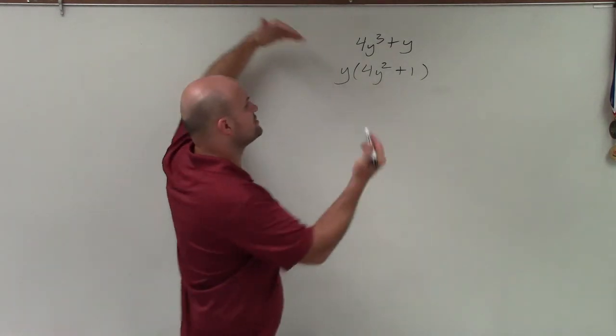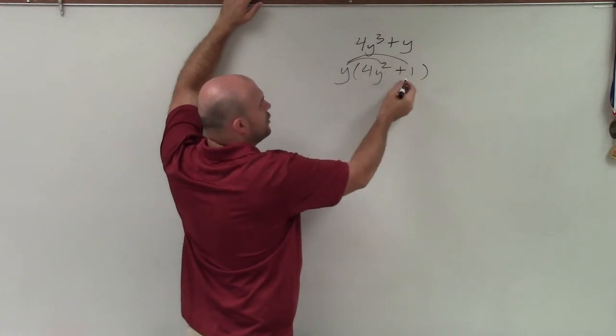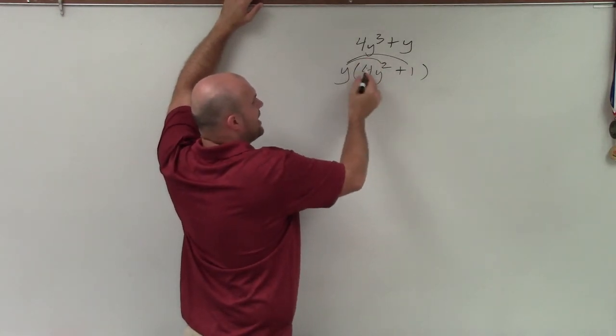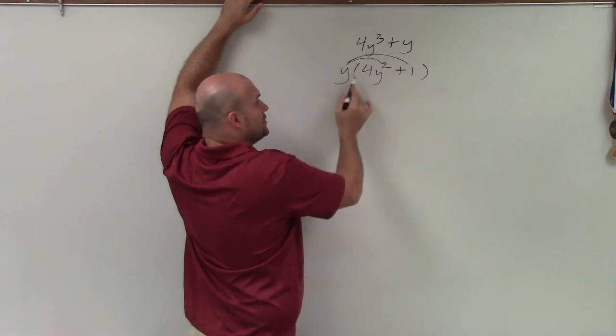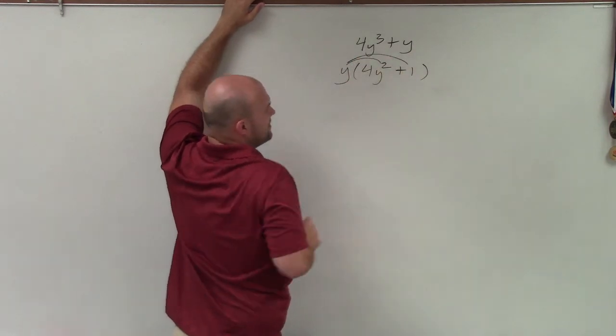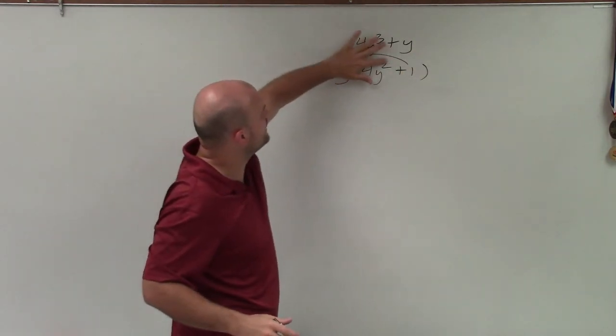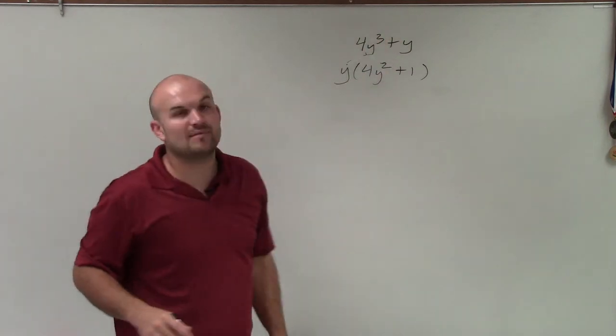Remember, we can always double check our work by multiplying back and making sure y times 4y squared gives 4y cubed, and y times 1 gives y. So therefore, this is the factored form of the polynomial.